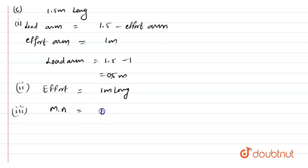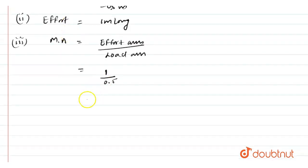As we know mechanical advantage is the ratio of effort arm to the load arm. By substituting the value of effort arm and the load arm we will get effort arm is 1 and the load arm is 0.5. Our mechanical advantage comes to be 2.